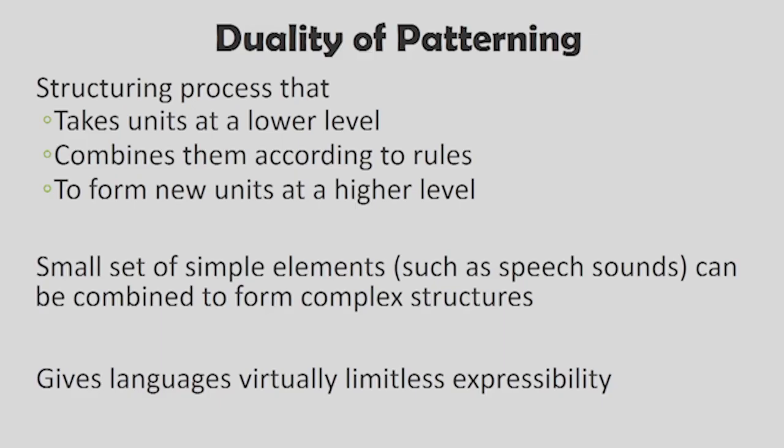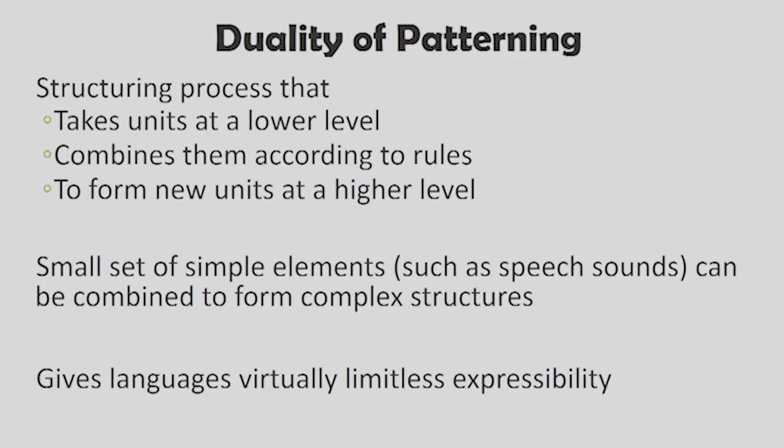Human language has structured components, so a lot cannot be expressed through animal communication systems whereas human languages have the property where a number of ideas can be expressed. Human languages also use arbitrary symbols that bear no resemblance to the actual object or concept being referred to. Duality of patterning is basically a property where lower units are combined with certain rules to form larger units, and these larger units are then able to describe a number of ideas.